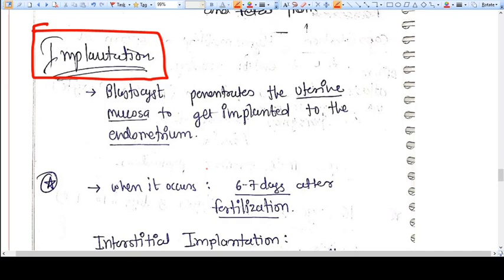The endometrium is well estrogenized after five to six days of progesterone. This endometrium will have glandular structures and nutrient structures ready to get implanted. So the blastocyst penetrates the uterine mucosa, that is the endometrium.